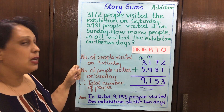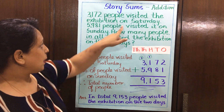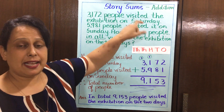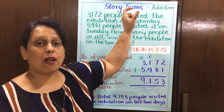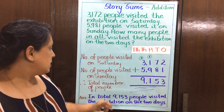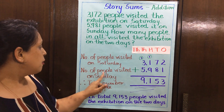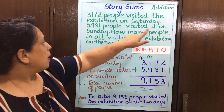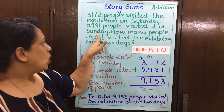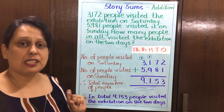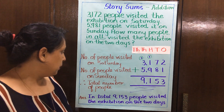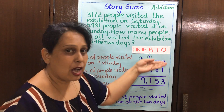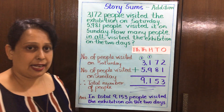Number of people visited on Saturday — these are called key words. Number of people visited on Sunday — again you just pick up the key words. I put the digits in the correct houses and place them correctly.